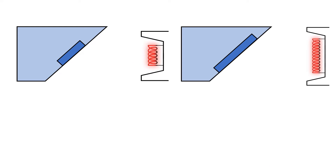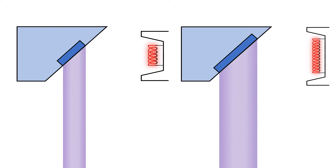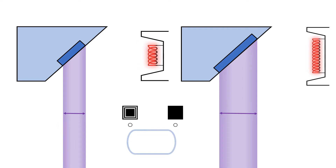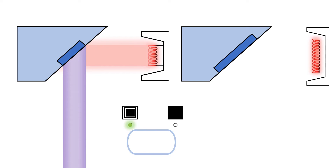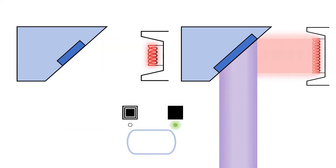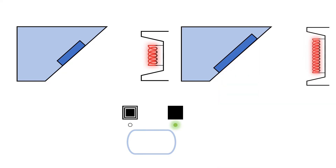On the left is an x-ray tube using a small filament and on the right is an x-ray tube using a large filament. Notice how the width of the effective focal spot changes when you select the small filament versus the large filament. The smaller filament produces a smaller effective focal spot and the larger filament produces a larger effective focal spot.